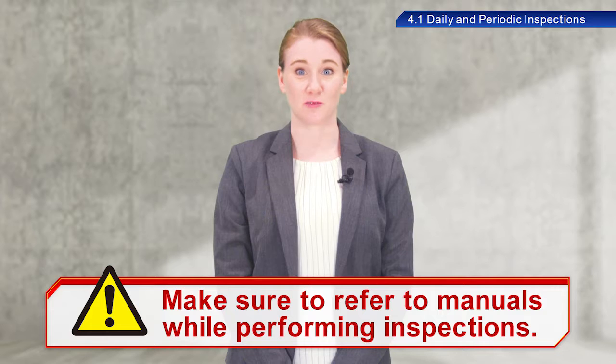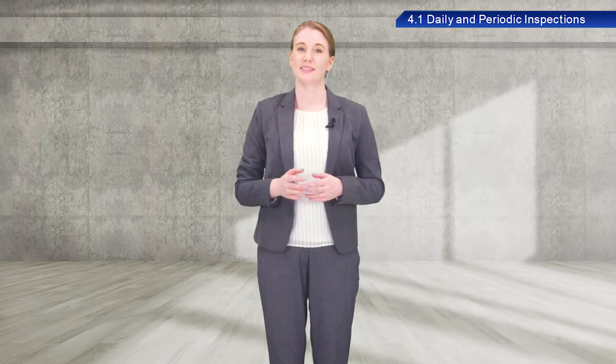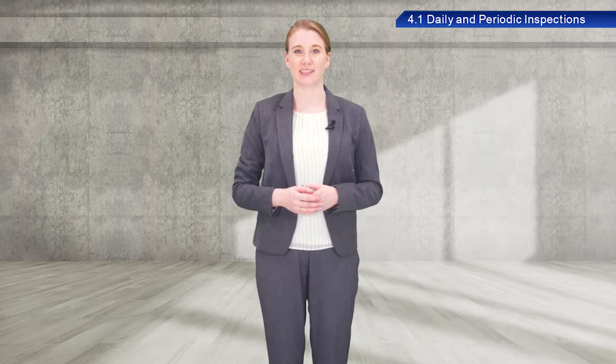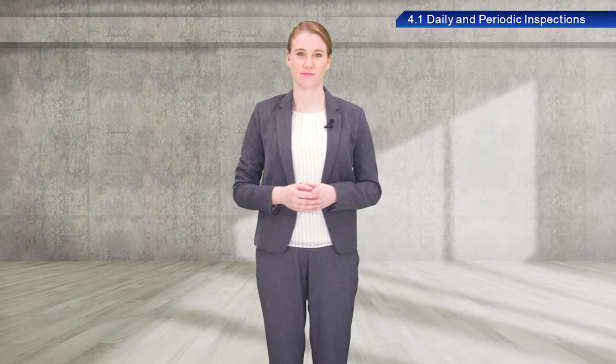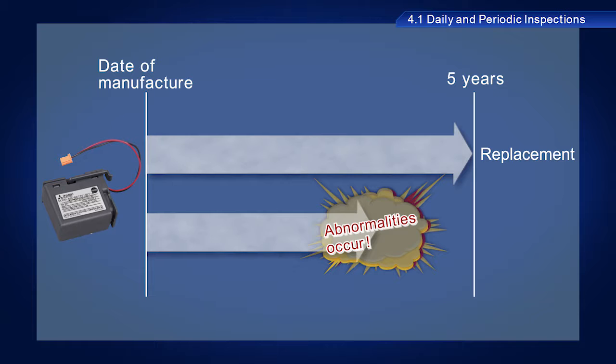Make sure to refer to manuals while performing inspections. Some AC servo parts must be replaced periodically. The battery is one of these parts. Servo amplifiers include a battery to maintain the current position information stored in the encoder memory when the power to the servo amplifier is turned off. Batteries typically last for five years from the date of manufacture but may need to be replaced before then as necessary.